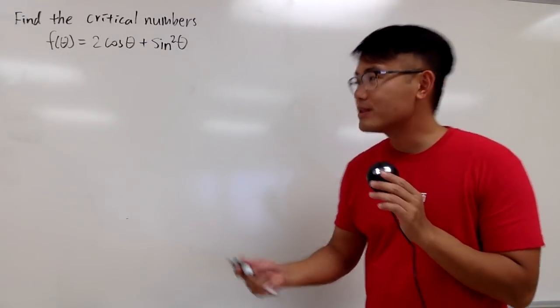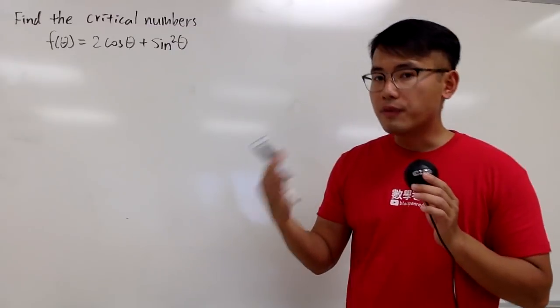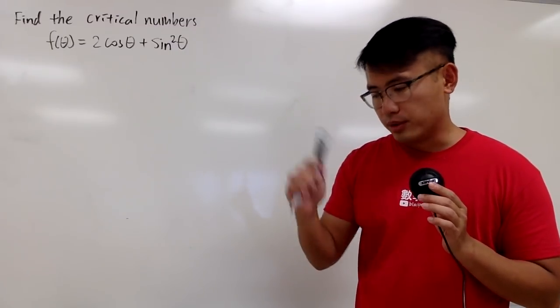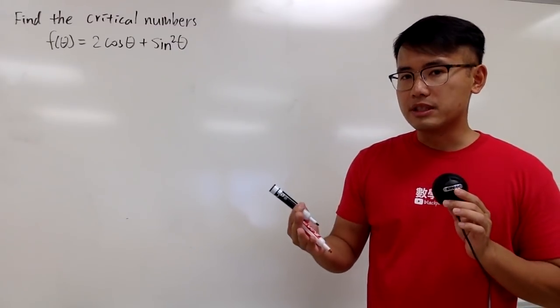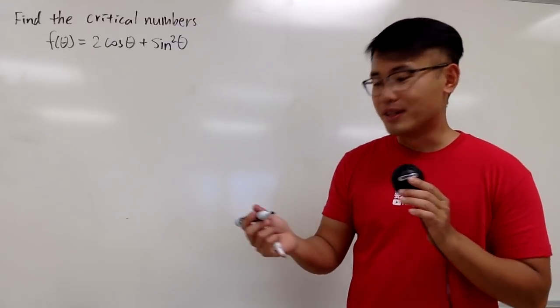Okay, we are going to find the critical numbers of this function. And remember, a critical number is where the first derivative of the function is equal to 0, or maybe the first derivative doesn't exist there. So of course, we have to get our first derivative.